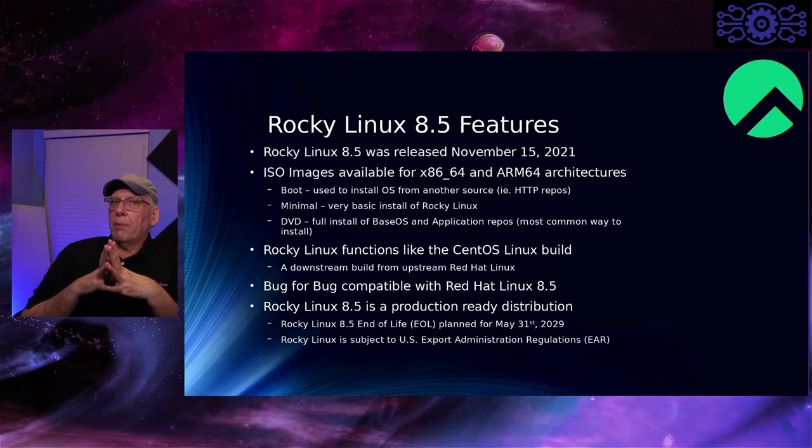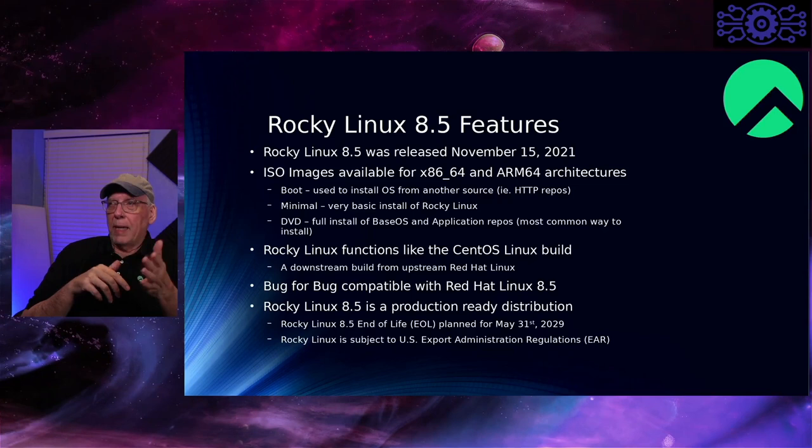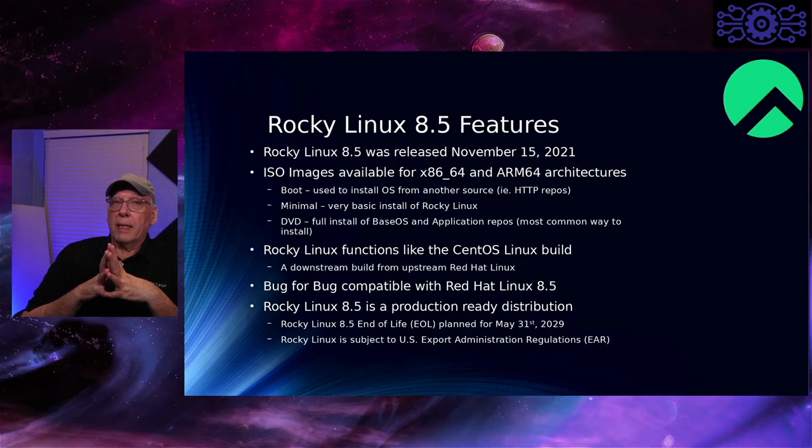Rocky Linux 8.5 was released on November the 15th of 2021. RHEL released their version on, I think, November the 9th. So it wasn't very long before they actually released Rocky Linux, and there's a reason for the delay — they would have done it sooner, but we'll talk about that.